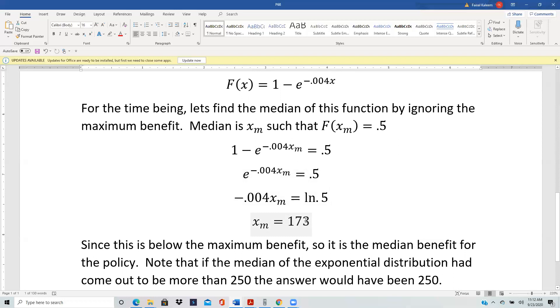But let's say this median had come out to be more than the maximum benefit. So then there's no way you can get more than 250. So in that case, it stops at 250 and then 250 becomes the median of the benefit. So in a nutshell, the median will be whatever you get as the median of the exponential as long as it's below the maximum, and it will be equal to the maximum value if the median exceeds the maximum.